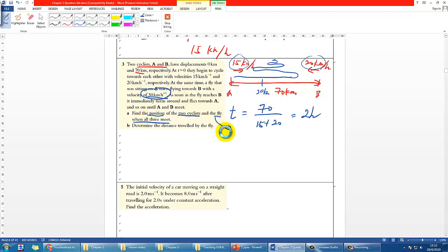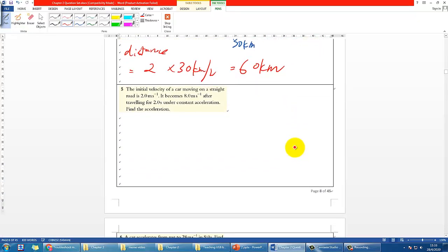The answer for the position should be 30 km. Part b, determine the distance traveled by the fly. Since we already know the time which is two hours, the fly should have a constant speed of 30 km per hour and it took two hours, so the total distance that the fly did is two hours times 30 km per hour, so that is 60 km. That is question three.